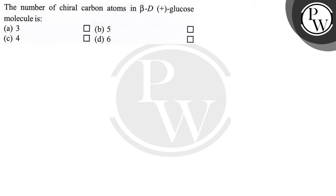Hello bachcho, let's read the question. The question says the number of chiral carbon atoms in beta D glucose molecule is 3, 5, 4 and 6.